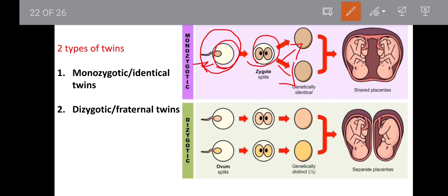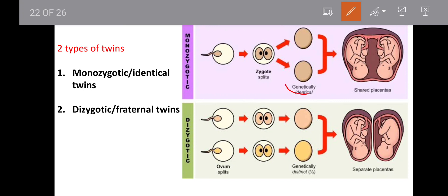So, one zygote, one fusion, one sperm, one egg — a single zygote forms and that zygote divides. The two resulting cells develop into two babies. They share a single placenta.